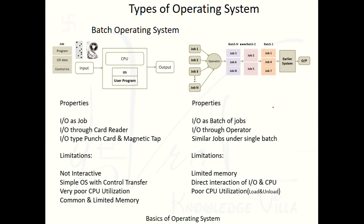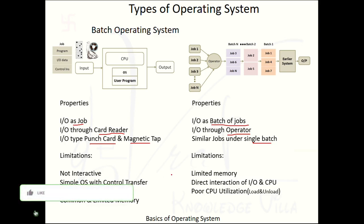Now let's compare the Batch Operating System with the earlier system. In the earlier system, I/O was a single job; here there are multiple jobs — a set of jobs as I/O. In the earlier system, input was produced using card readers, punch cards, and magnetic tape; here input and output are produced by the operator, and all similar jobs are grouped under a single batch.